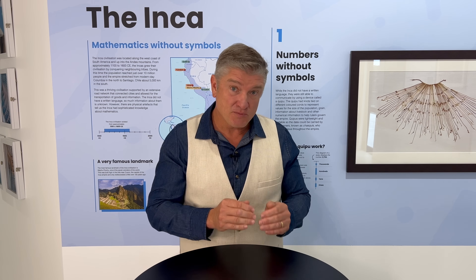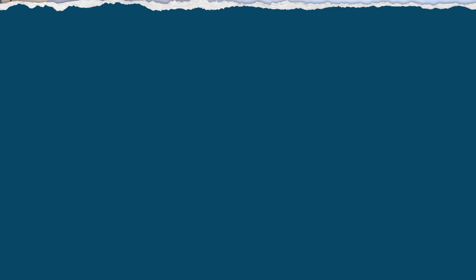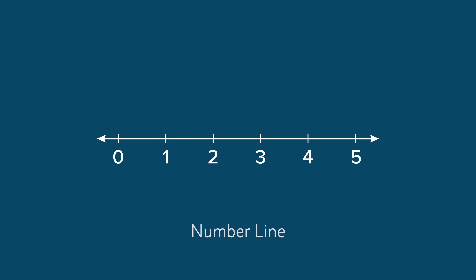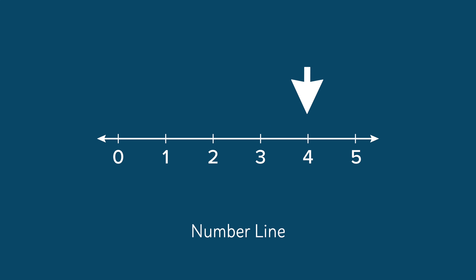Now let's look at how this model differs from a length model such as a number track. Here we have a number track that shows one to five. If I asked a child to find four on the number track, they could count out the pieces from left to right — one, two, three, four — and point to that piece and say it is four. This is why we do not show zero on number tracks or hundreds boards, because zero is not a counting number. Now here is the number line from zero to five. If I asked the student to find four on the number line they could start at zero and count the jumps — one, two, three, four — and then point to the location and say it is four because it is four jumps of one from zero. In doing so they are describing a distance from zero.